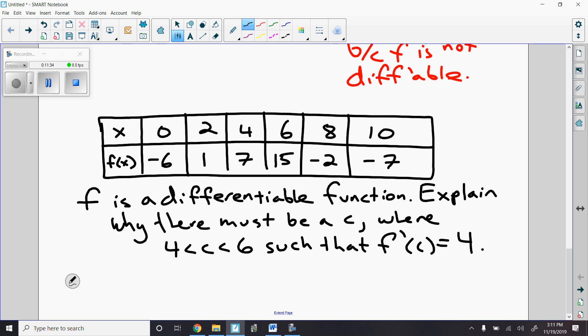Now, that is a differentiable function. Explain why there must be a C where 4 is less than C is less than 6 such that F prime of C is 4. Now, we've seen this kind of question before, but I've been asking about F of C, right, in terms of intermediate value theorem. Well, right, if it was just F of C equals 4, I'd have to use the intermediate value theorem. And, in fact, it wouldn't work here because 4 is not in between 7 and 15, okay? But notice the table is about F. The question is actually about F prime. And then I'm asked about the derivative of the function I have in the table. That's a clue that it's probably going to be a mean value theorem question.